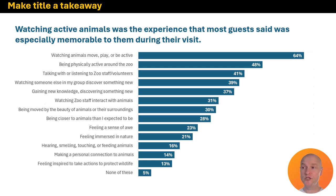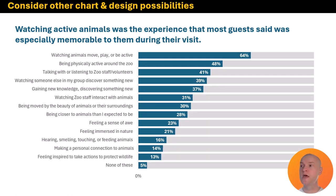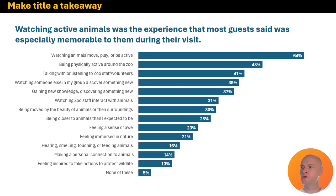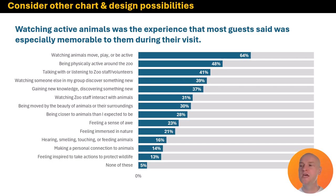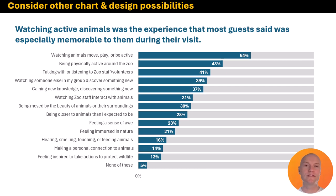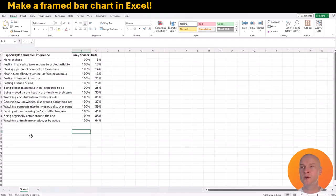Now, you might also want to consider a different chart type. For a select all that apply question like this, you could use a bar chart, but you could also use a framed bar chart — a chart I love to use in Excel that you can make simply right here. It gives a visual nod to your reader that every single one of these items could have been selected by 100% of visitors, but obviously was not. Here's a little screen recording showing how to make it.